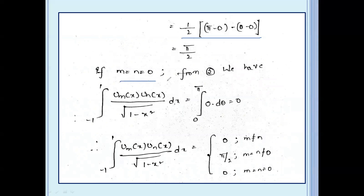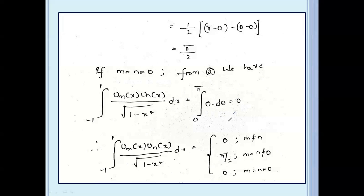Third condition: if m equal to n equal to 0, then m and n values are 0. So the integral from minus 1 to 1 of Um(x) Un(x) divided by root(1 minus x squared) dx equals integral from 0 to π of sin 0 times sin 0 dθ, which equals integral from 0 to π of 0 dθ, which equals 0.